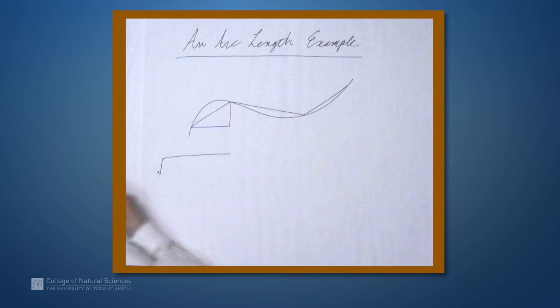So this means that the arc length here is equal to the square root of the change in x squared plus the change in y squared. So I'll call this Δy and this Δx.